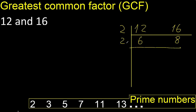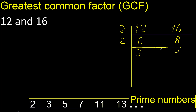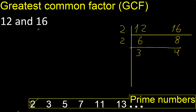Divide again: 6 divided by 2 is 3, and 8 divided by 2 is 4. We stop here because 3 and 4 cannot be divided by the same number. Finish.